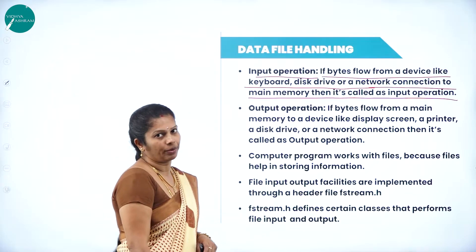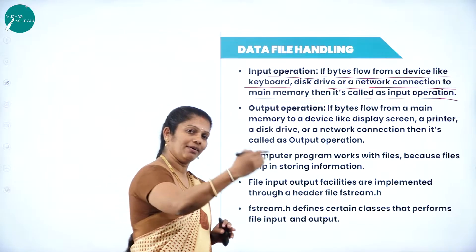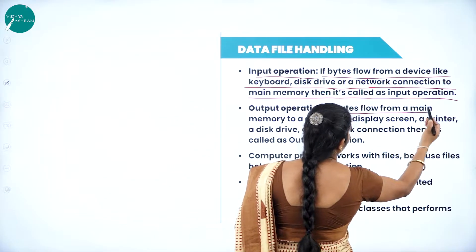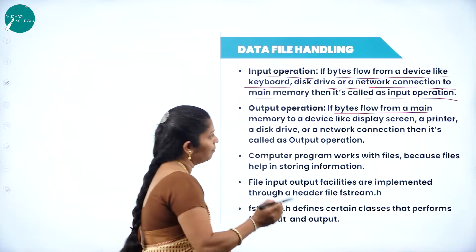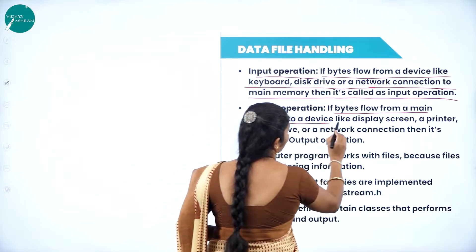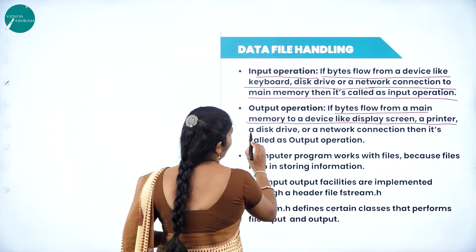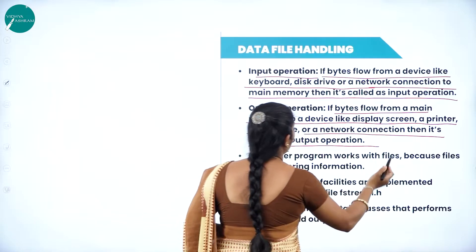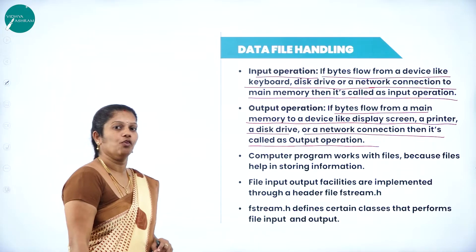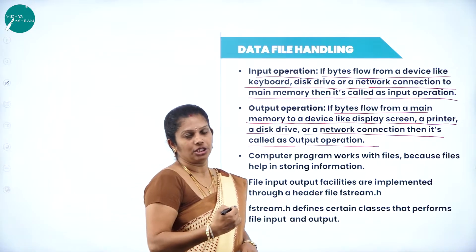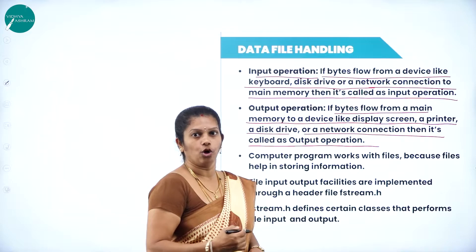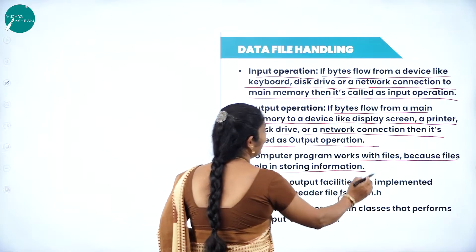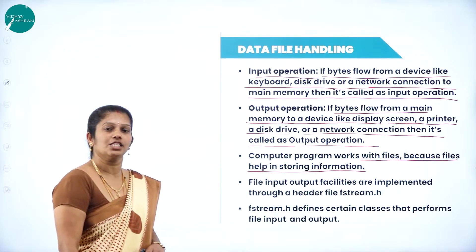An output operation is when the user gets the result from output devices. If bytes flow from main memory to a device like a display screen, printer, disk drive, or network connection, then it is called an output operation. Computer programs work with files because a file helps in storing information — it is a basic storage unit.